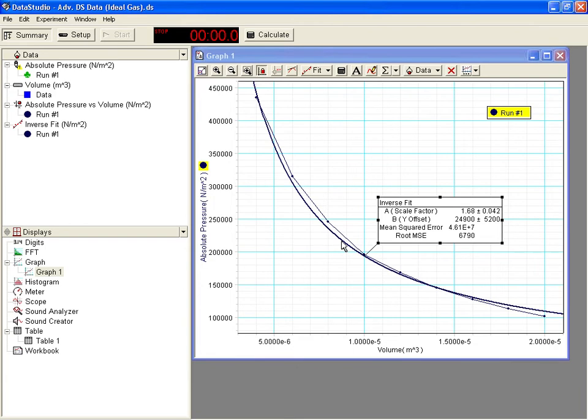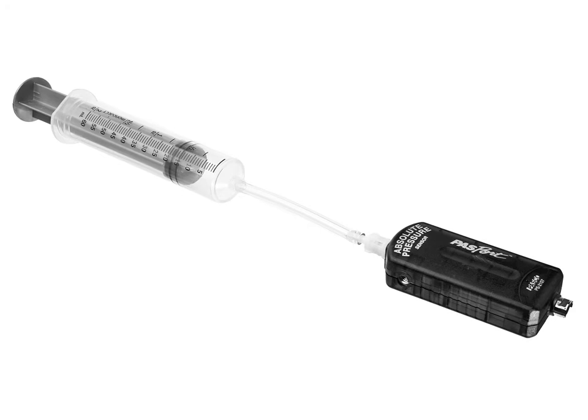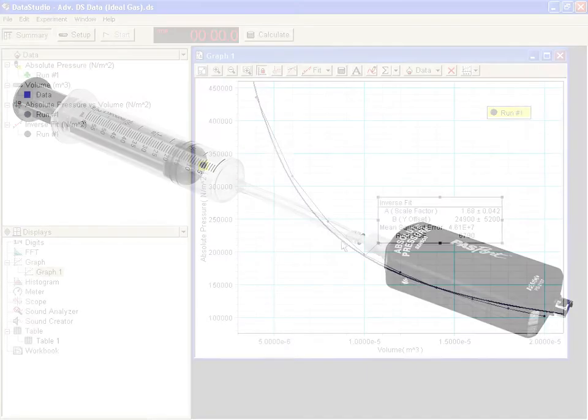Can anybody tell me what's not right here? If you may have noticed when I was describing the setup, we were changing the volume of the syringe, but there was a two-inch section of tubing that connects the syringe to the sensor. The volume of air that's in that tubing is unaccounted for in this data.